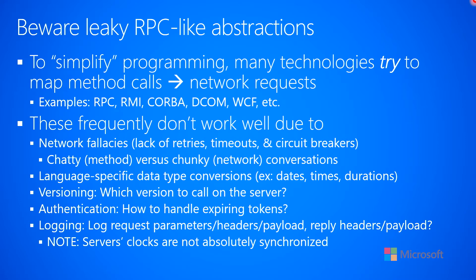There are lots of reasons for this. The first is the network fallacies — you'll remember I started this section by talking about the eight network fallacies. A lot of these APIs don't do retries for you, they don't support timeouts, and they don't support circuit breakers. These are things you really want when making network communication in a distributed cloud world. You also want to avoid chatty methods where you make lots of little requests to a server, because those introduce a lot of latency, hurt performance, and put a lot of congestion on the wire.